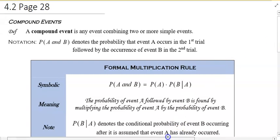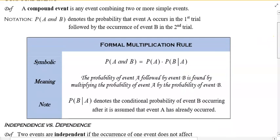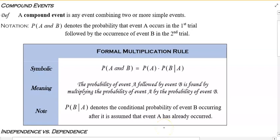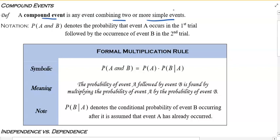Section 4.2 is on page 28. It talks about compound events. We did a portion of this and I left the second half to give you a chance to finish the first probability. A compound event is any event combining two or more simple events. Probability of simple events are really simple — there's only one way of doing it. Compound is a bit of a challenge because there are multiple events happening at the same time.